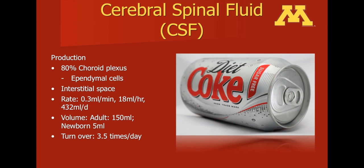While many may prefer to remember that humans produce 0.3 milliliters per minute, or 18 milliliters per hour, and approximately 150 milliliters per day, I find it easier to remember that adults produce approximately 150 milliliters per day — essentially the equivalent of a can of Coke.